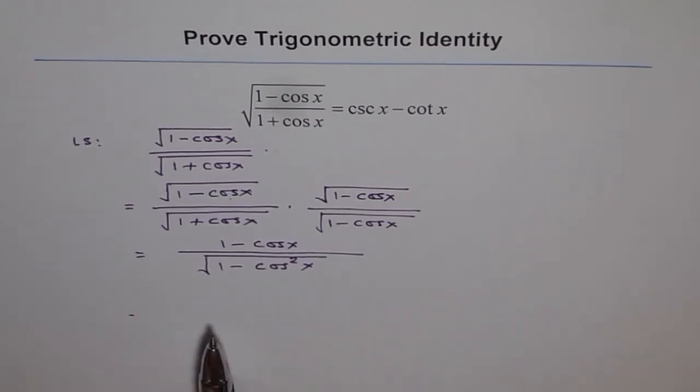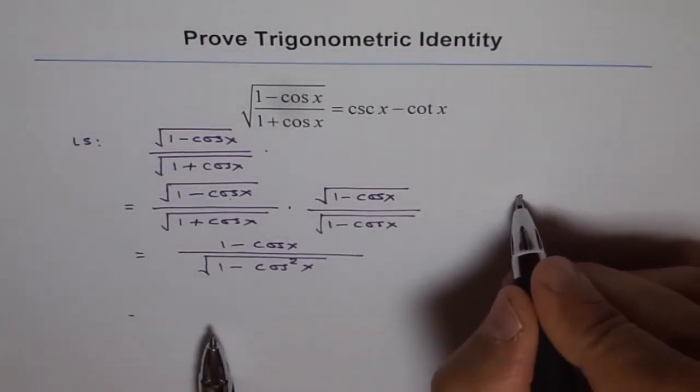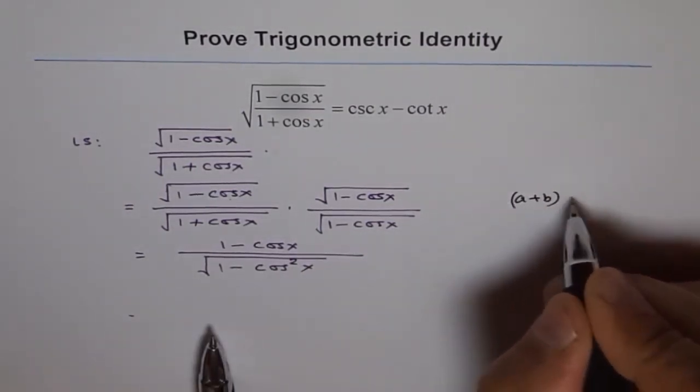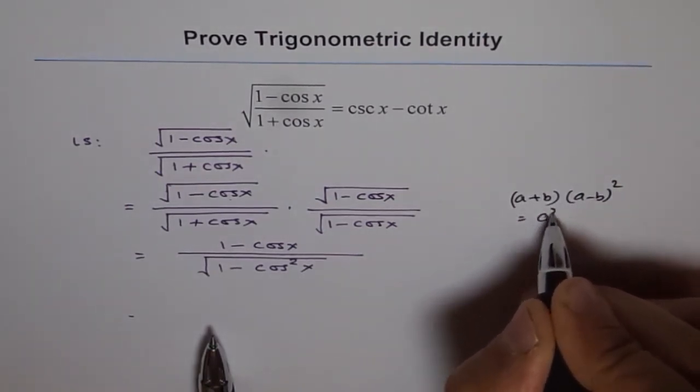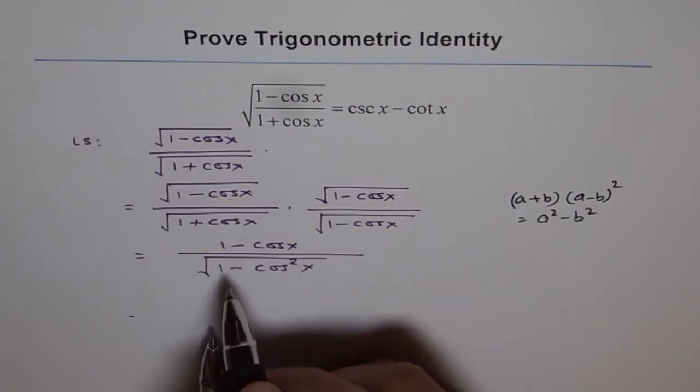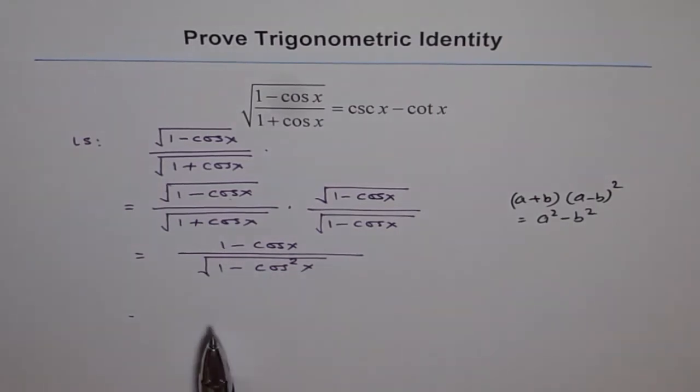It is because a plus b times a minus b is equal to a square minus b square. So that is how it helps.